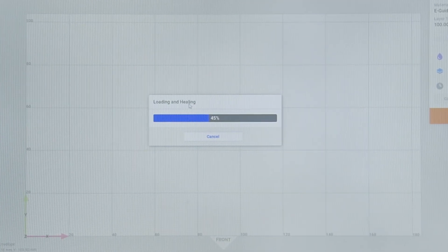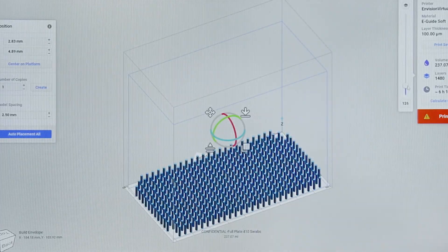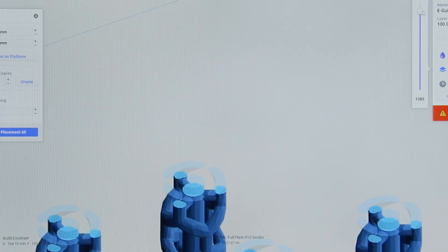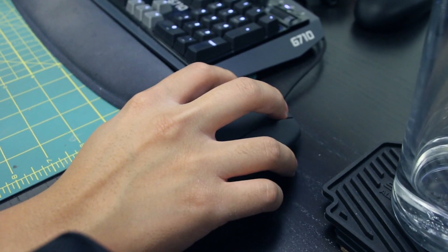Swab production begins with the importing of digital swab designs into E1RP software. The designs are arranged in the form of a build job before being sent to the Envision 1 to be 3D printed.